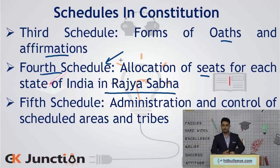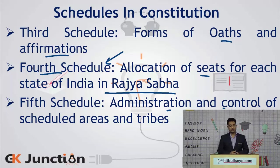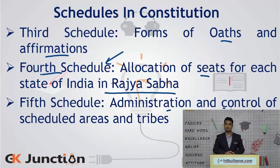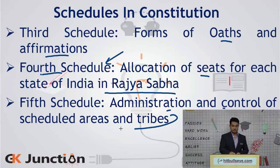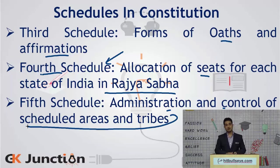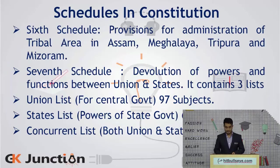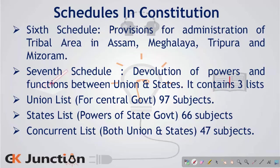The fifth schedule deals with the administration and control of scheduled areas and scheduled tribes. These scheduled areas and scheduled tribes are notified by the central government. The sixth schedule complements the fifth schedule as it deals with the provisions of administration and control of autonomous areas.